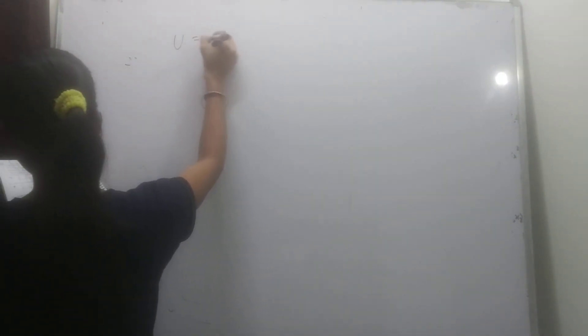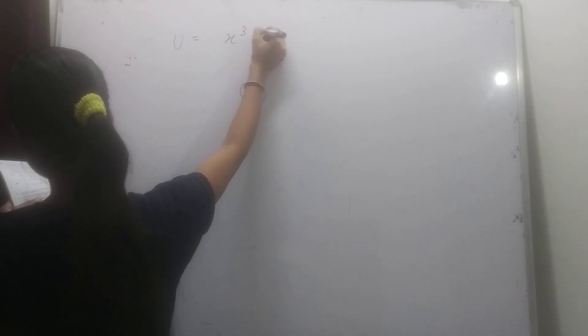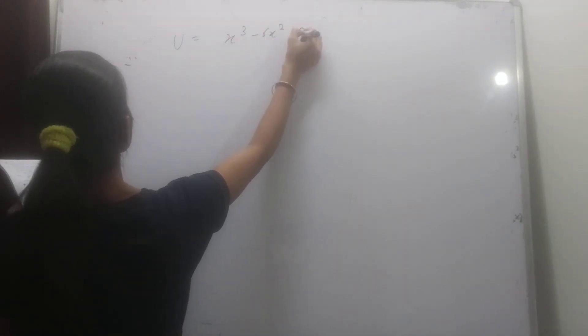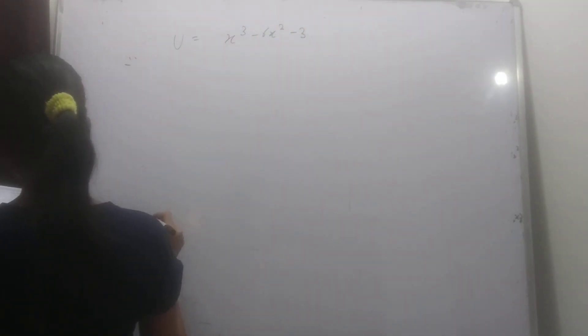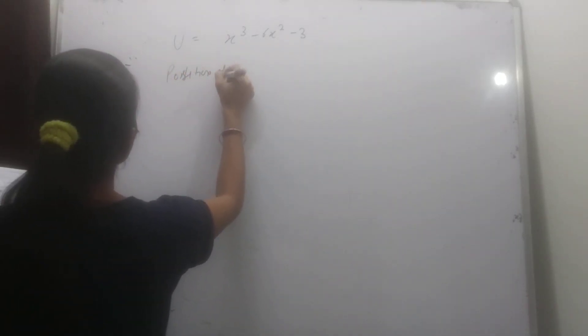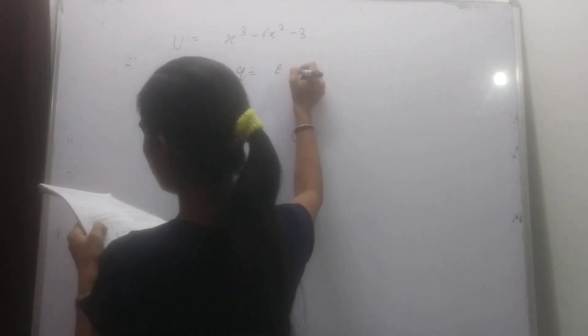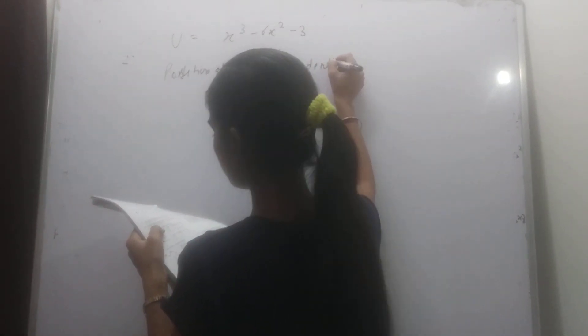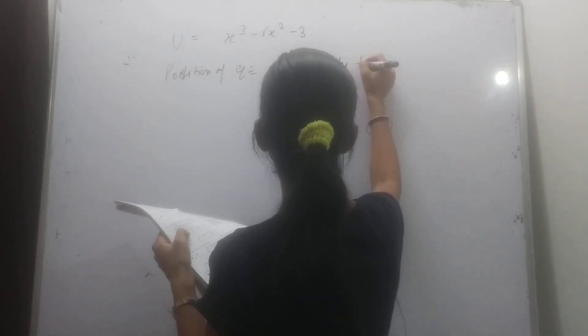Potential energy stored inside a body varies according to the relation U equal to k times x cube minus 6x square minus 3. Find out position of equilibrium and identify type of equilibrium.